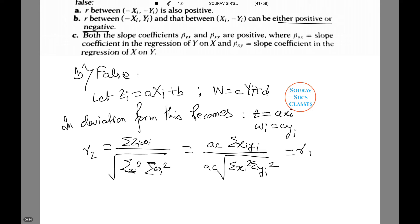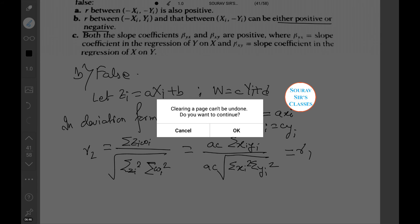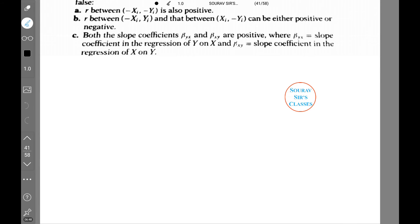This equals AC summation xi·yi divided by AC root of summation xi square summation yi square. This equals r1. And hence we see that our obtained answer is false. Let's see what number C says. Both the coefficients βyx and βxy are positive, where βyx equals slope coefficient in the regression of y on x and βxy equals slope coefficient in the regression of x on y.